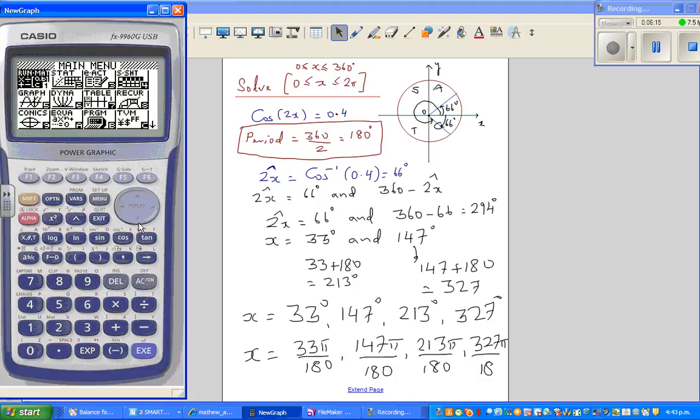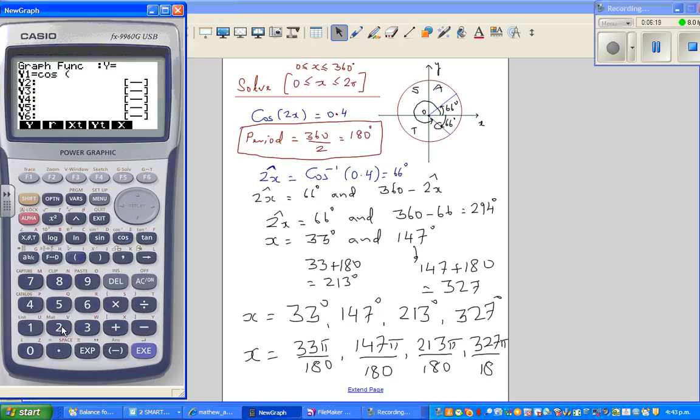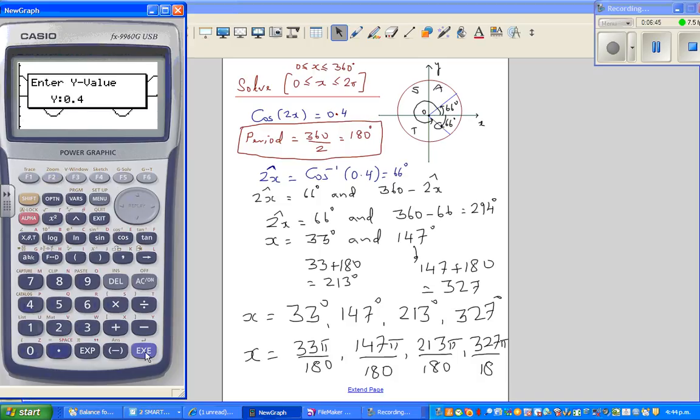Let's check this on a calculator. Go to graph and type in cos bracket 2x close the bracket. This is two cycles. The final equation was cos 2x is 0.4. We're asking the calculator, tell me the x's where you have got 0.4. Go gsol and then xcalc. I'm asking 0.4 where is—one is 33.2, that's the first answer. If you scroll, 146.7, that's 147. Then the next is 213 degrees and the next is 326, 327.